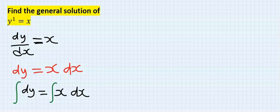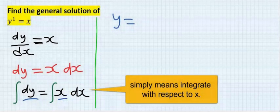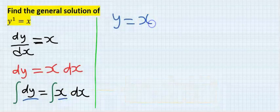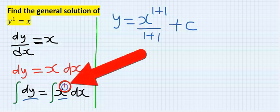Next, find the value of your integration. If I integrate dy, I'm going to just have y. And if I integrate x, I'm going to have x one plus one over one plus one, then plus c. There is a one here that is not often written.